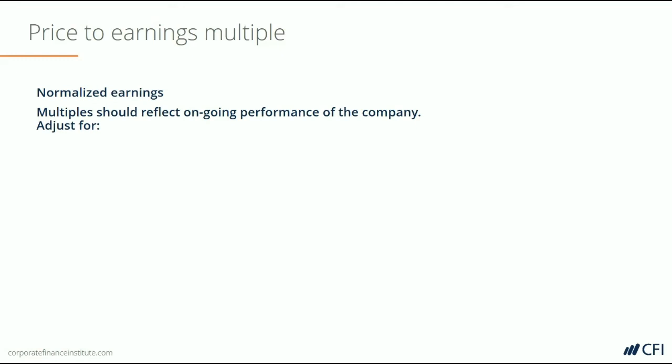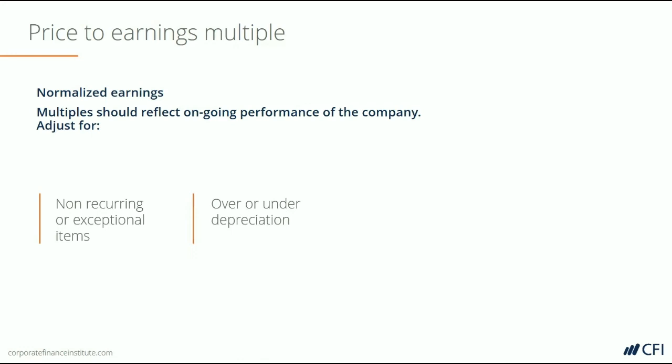Let's also look at normalization of earnings. Earnings includes a lot of so-called noise in the financial statements and things that need to be adjusted for. The first thing is non-recurring items — if there's a one-time gain or loss, that should be backed out of earnings since it's not expected to happen every time. If the company is using a depreciation method that significantly over- or understates the expense, that could be another adjustment. If there was a profit or loss on a sale of an asset — for example, a piece of property — that would also be adjusted out.